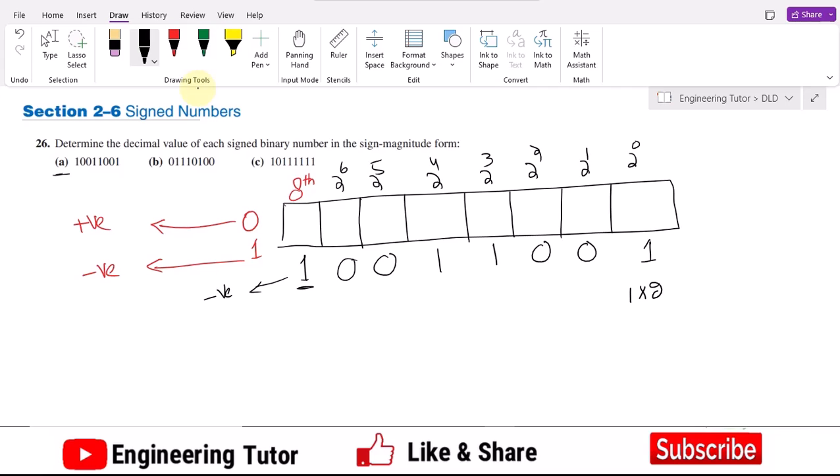This is for the sign while others will be used for the decimal conversion. So here it will be 1 multiplied by 2 raise power 0, similarly it will be 0 here, it will be 0 as well,